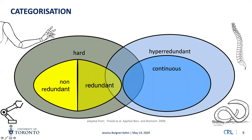Some continuum robots are also made of soft materials. The majority I work with are made of elastic materials with very high bending stiffness, though some are also soft.